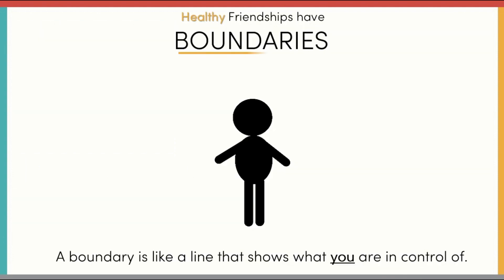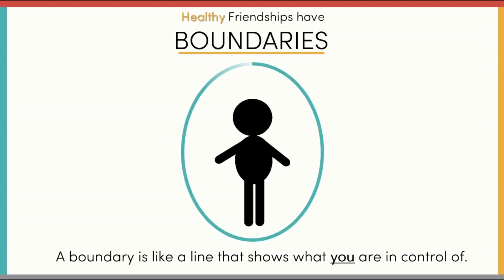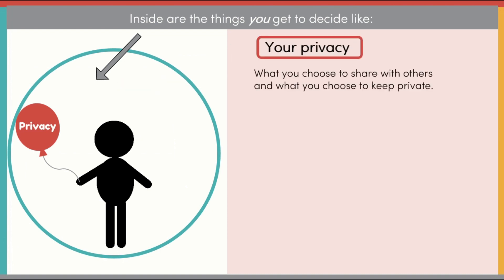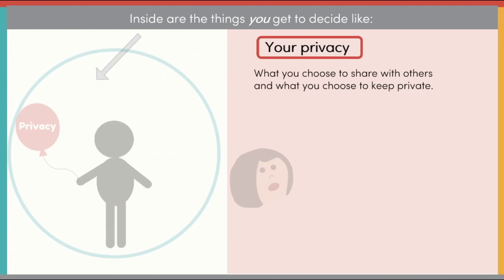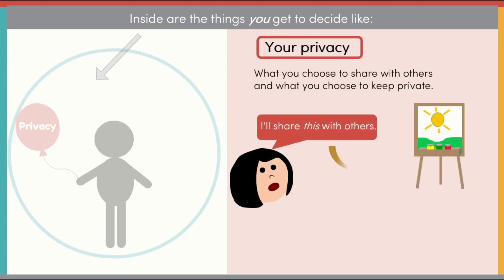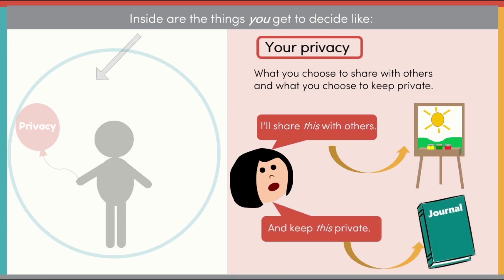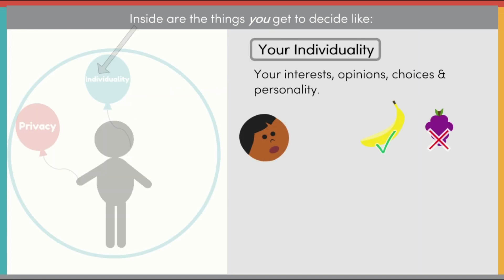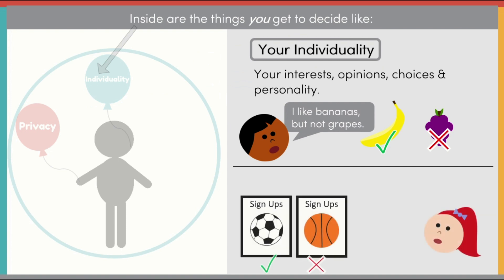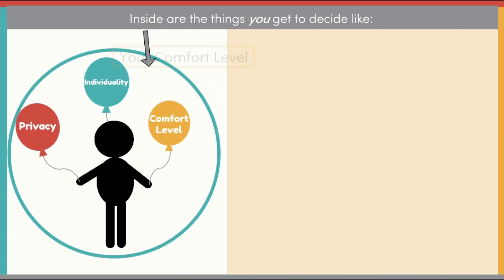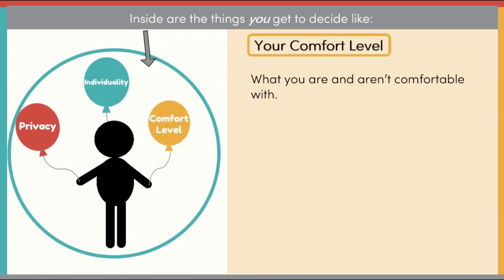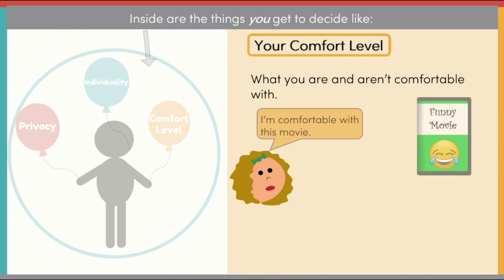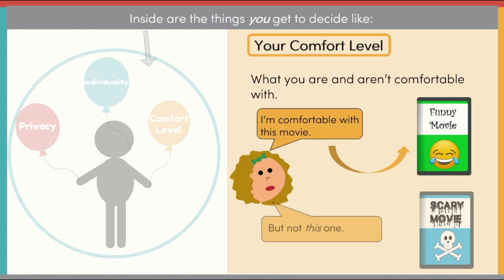For example, in the section on boundaries, students learn through visuals what boundaries look like and what different types of boundaries are with examples — such as privacy, which means you get to choose what you keep private and what you share; individuality, like your own interests, choices, opinions, and personality; and comfort level, which is what you are and aren't comfortable doing.